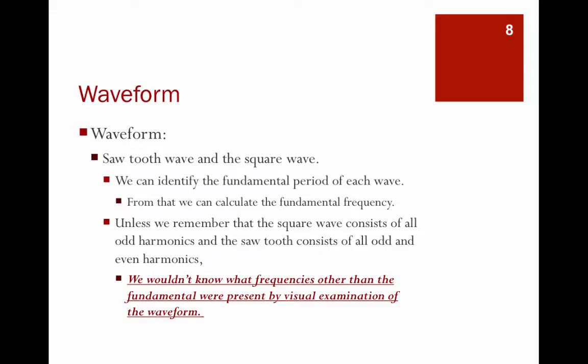With the waveform, we've spoken about sawtooth waves and square waves. A waveform is a graph — a picture — it shows amplitude as a function of time, and we can use it for sine waves or complex waves. But when there are complex waves on the waveform, it's hard to identify the amplitude or the frequencies and the phases of all the waves, because a complex wave is a combination of a number of sine waves, a number of pure tone waves.